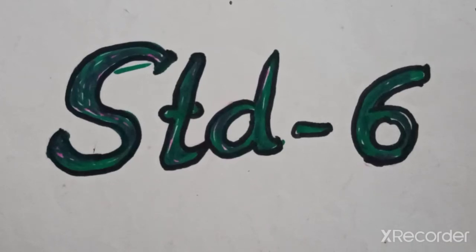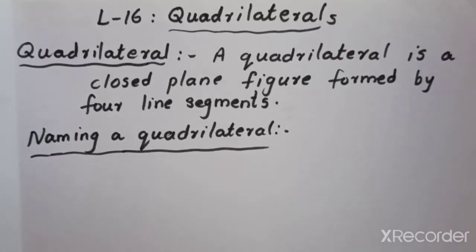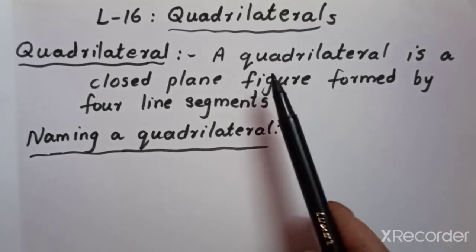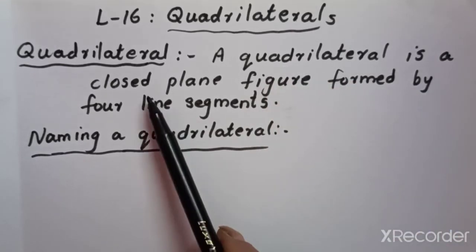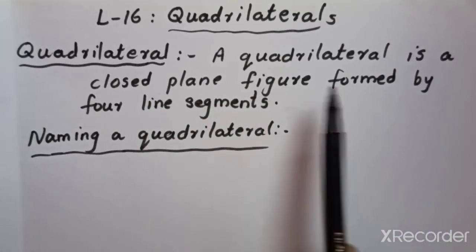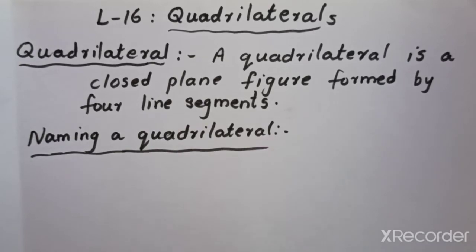Standard 6 Maths Lesson No. 16 - Quadrilaterals. We have studied about triangles and their properties. Now Lesson No. 16: Quadrilaterals. What does quadrilateral mean? The definition of a quadrilateral is: a quadrilateral is a closed plane figure formed by 4 line segments.